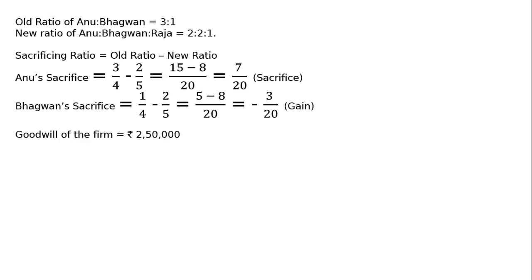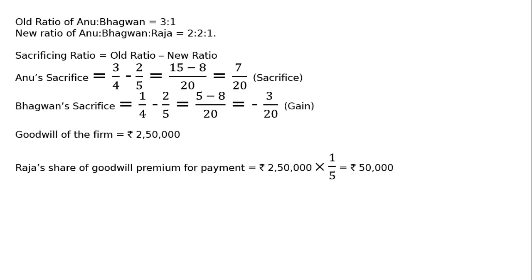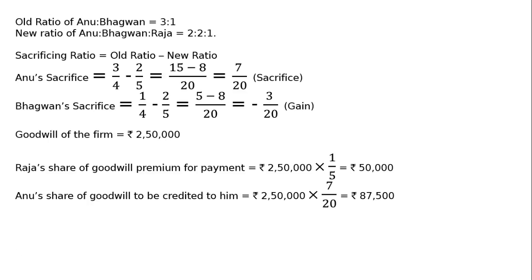Goodwill of the firm is now valued at Rs. 2,50,000. Hence, Raja's share of goodwill premium for payment to the firm is Rs. 2,50,000 multiplied by 1/5, which equals Rs. 50,000. It is told in the question that Raja will pay his share of goodwill premium in cash. Hence, Raja will pay premium of Rs. 50,000. Anu's share of goodwill credited to him is Rs. 2,50,000 multiplied by 7/20, which equals Rs. 37,500.